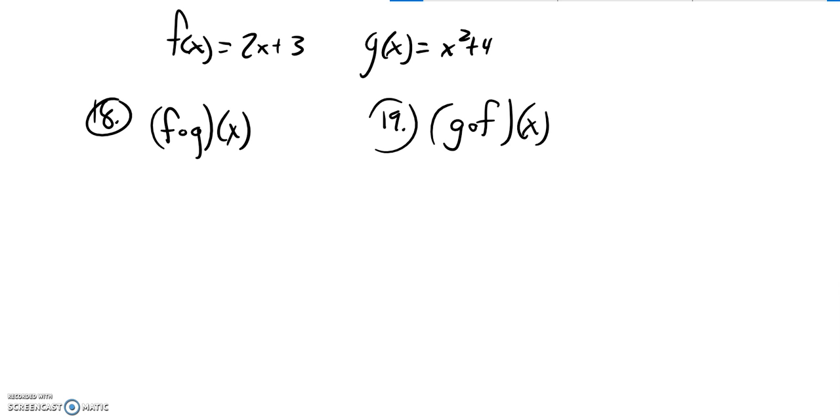So I'm supposed to figure out f of g of x. Remember this notation is f of g of x. That means we're taking g of x and plugging it into f. So g of x is x squared plus 4.